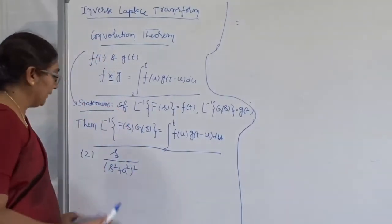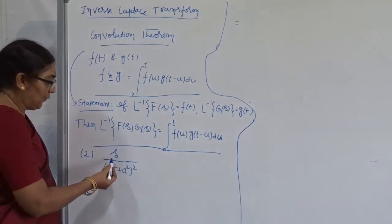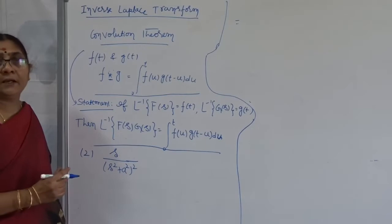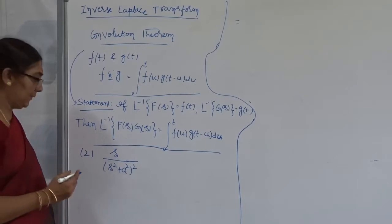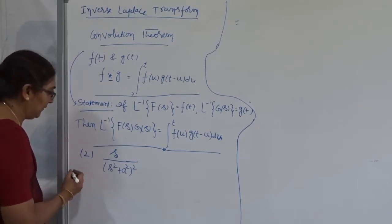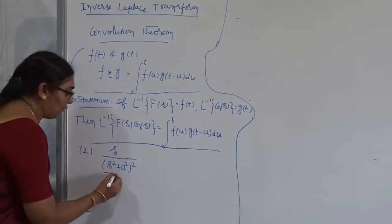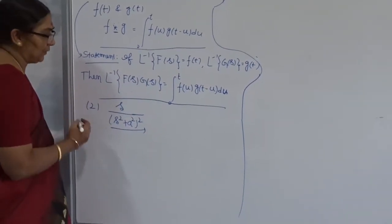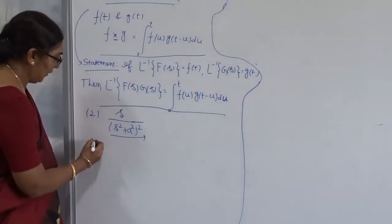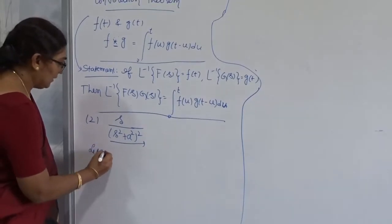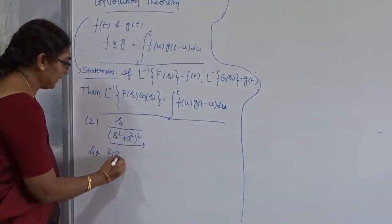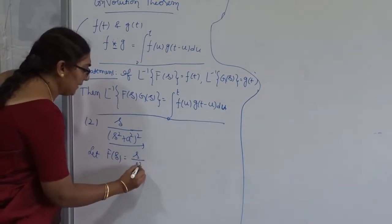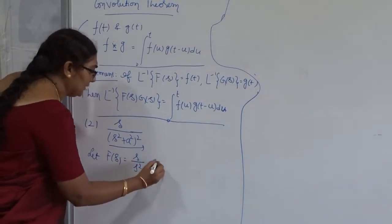Now I am going to take another problem. I have to find out the inverse Laplace of S divided by (S² + a²)² using the convolution theorem. As I mentioned in my previous video, if you want to apply the convolution theorem, first I have to choose it as a product of two functions. So let F(S) = S/(S² + a²).